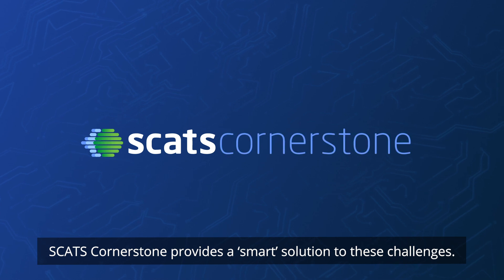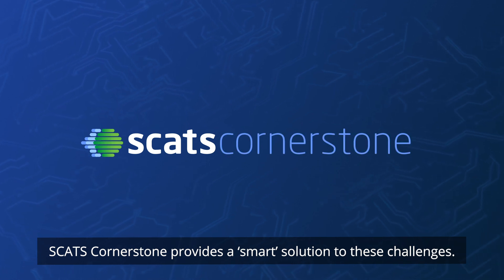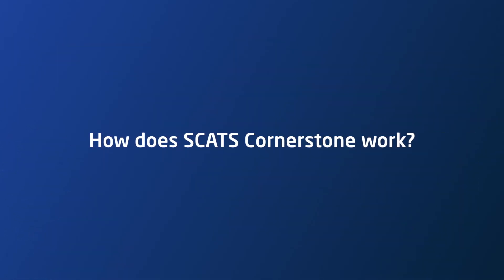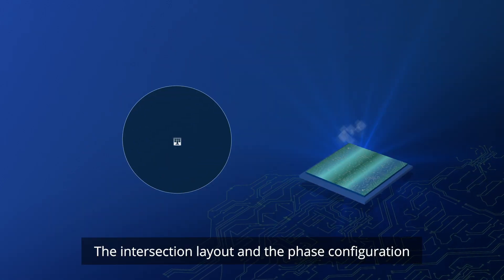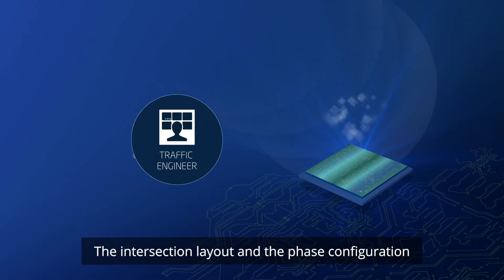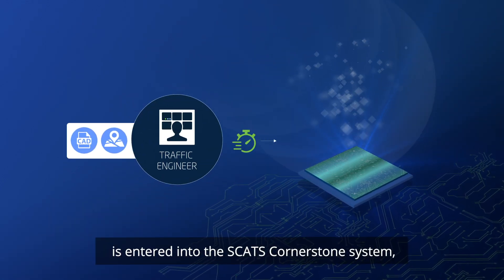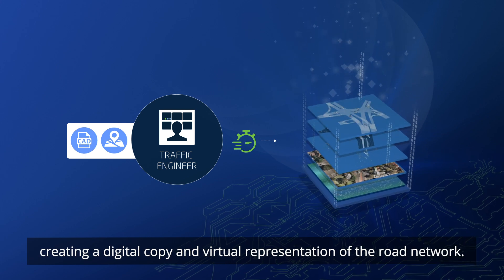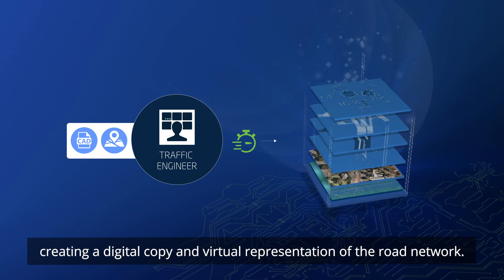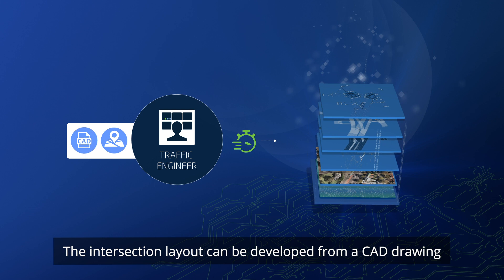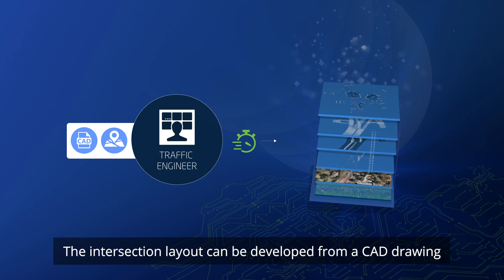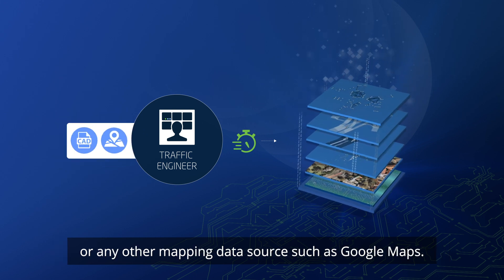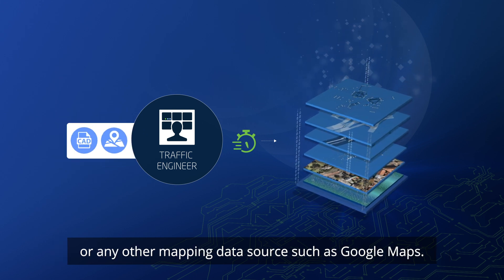SCATS Cornerstone provides a smart solution to these challenges. The intersection layout and the phase configuration is entered into the SCATS Cornerstone system, creating a digital copy and virtual representation of the road network. The intersection layout can be developed from a CAD drawing or any other mapping data source such as Google Maps.